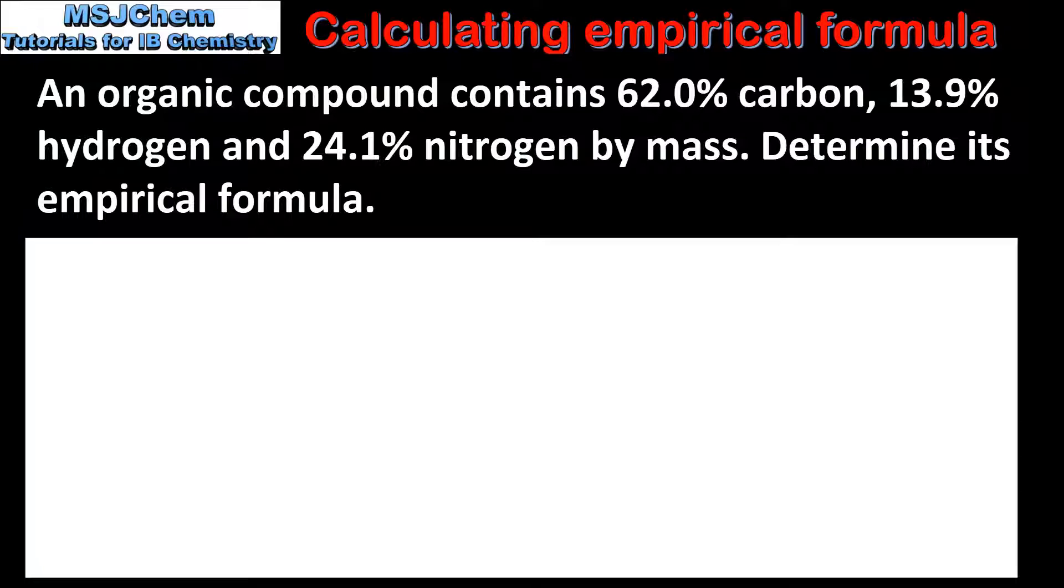An organic compound contains 62% carbon, 13.9% hydrogen, and 24.1% nitrogen by mass. Determine its empirical formula.